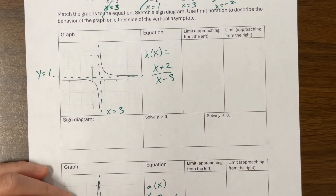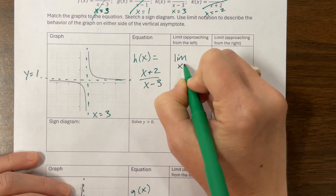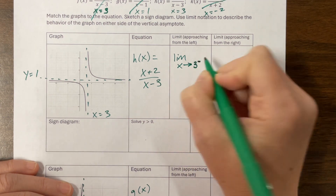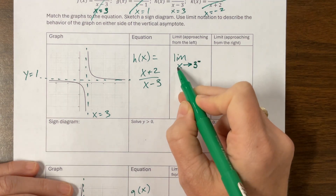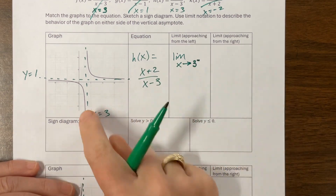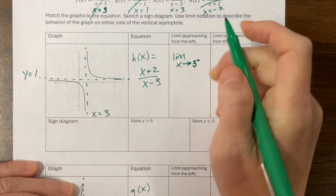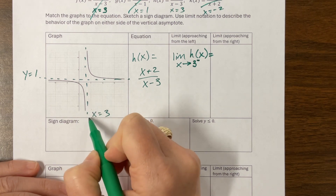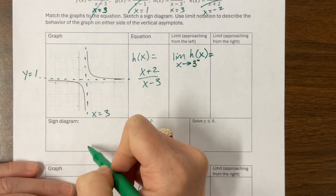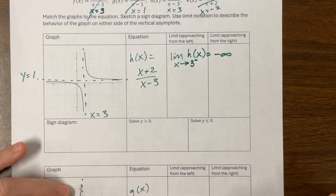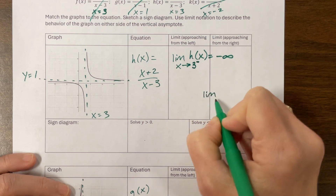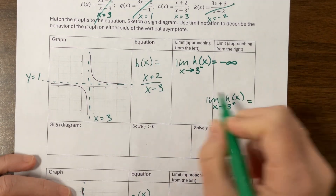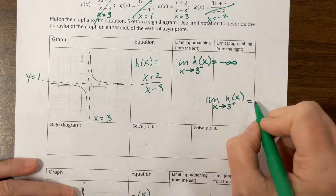We're going to say the limit as x approaches — well, my asymptote was at x equals 3. So we're going to say the limit as x goes to 3 from the left; we put a little negative sign right there. We don't put it out front because then we'd be saying what's happening as x goes to negative 3. I want x to go to positive 3, but from the left. This is h of x. As I get closer and closer to the asymptote of x equals 3, my values go down, down, down to negative infinity. For the limit as x approaches 3 from the right of h of x, as I approach from the right, I shoot off to positive infinity.